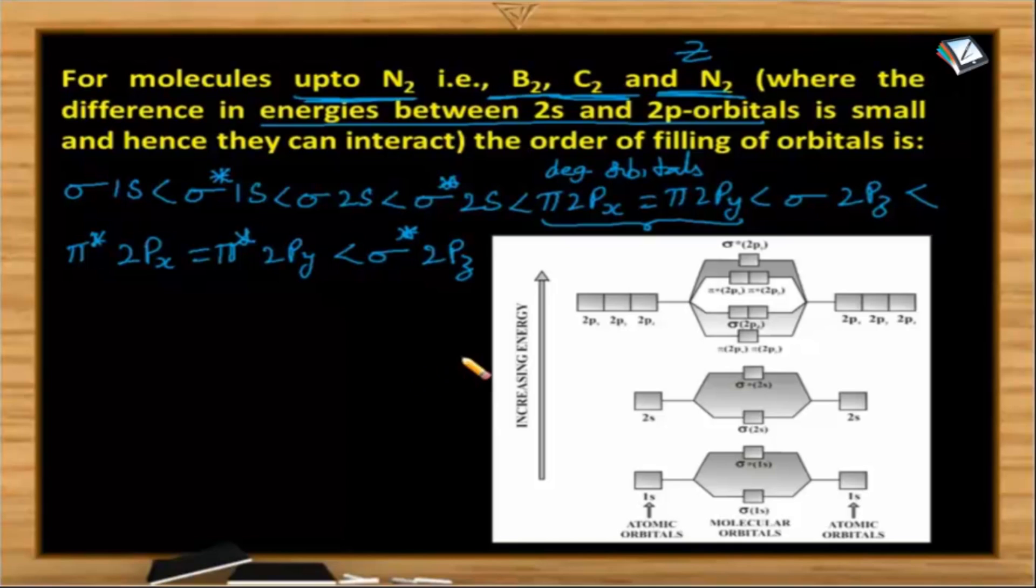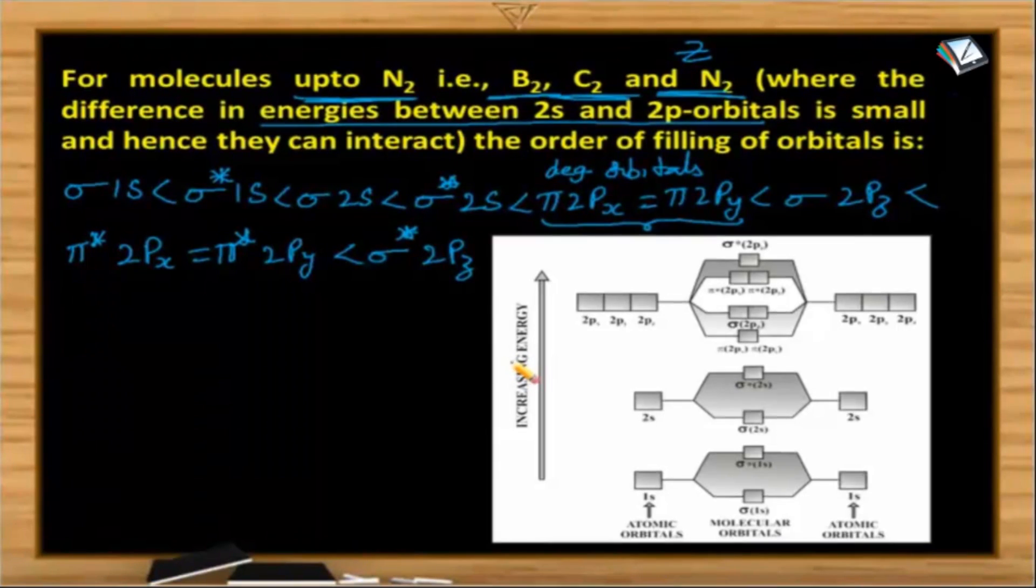So the previous part of the entire concept, it is only the concept related to this particular molecular orbital theory. But majority of the questions, we get it from this point only. How to write the molecular orbital configuration, how to make the diagram, what is that information we get from the diagram. So that is the major part of this particular session.